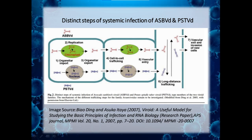This diagram shows the distinct steps of systemic infection in viroids. We can see how they first enter the organelle, then exit and move via cell-to-cell trafficking, then enter the vascular system — the phloem — for long-distance trafficking, then exit the phloem and enter a new cell to repeat the cycle.